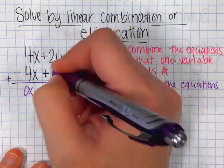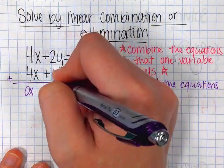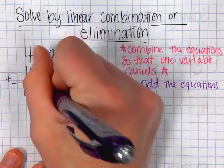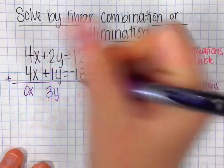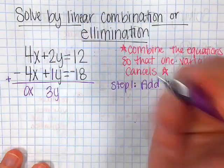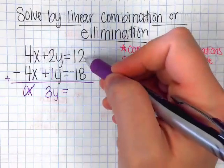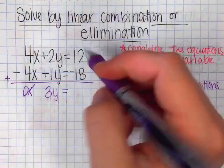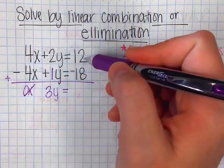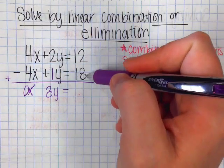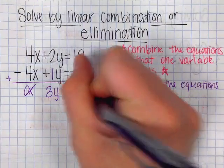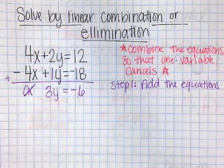Then I'm going to do 2y plus y. Remember, if I have 2y and a 1y, it actually becomes 3y, because 2 plus 1 is 3, equals. And then I'm going to do 12 minus 18. Well, if I give you $12, but I owed you 18, I still owe you 6 more.